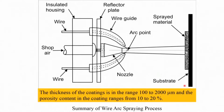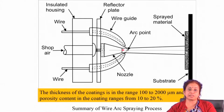The second type is arc spraying, where an electric arc is used as the heat source. A DC power supply feeds two wires, and at their contact point an arc is generated, which melts the wires. Compressed air is then used to break the molten material into droplets and spray them over the substrate surface. This is how the arc spray unit operates.